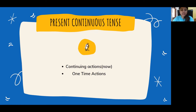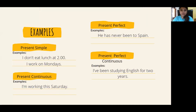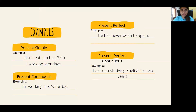We can also use present continuous for one-time actions, which relates a little to the future tense. Something happening just one time in the future — we can use the continuous form to describe that. For example, 'I am working this Saturday.' Students ask: why 'I am working this Saturday' and not 'I work this Saturday'? We use present simple for regular actions. If you usually work on Saturdays, say 'I work on Saturdays.' But if this Saturday is special and you don't usually work on Saturdays, use the continuous: 'I am working this Saturday.'